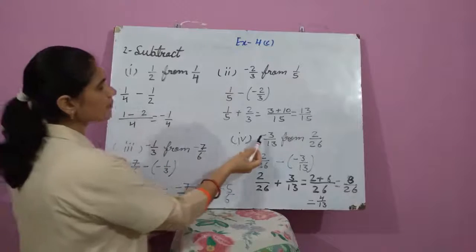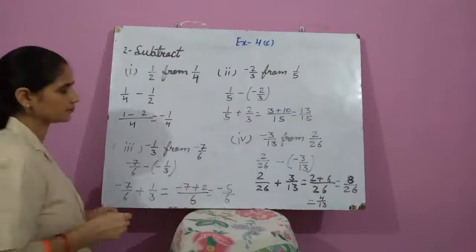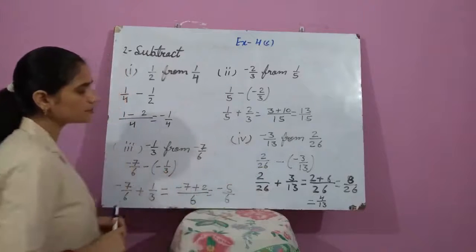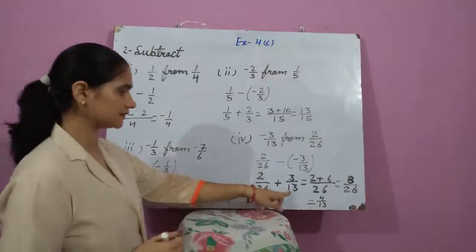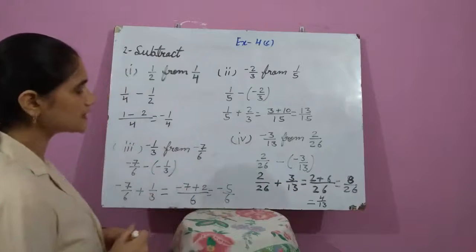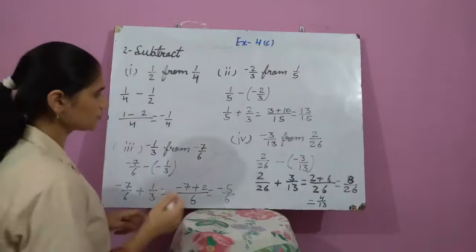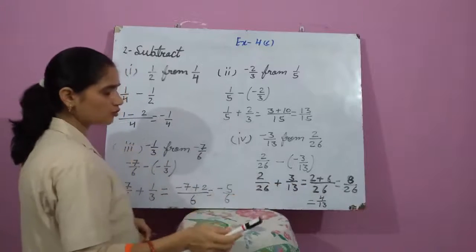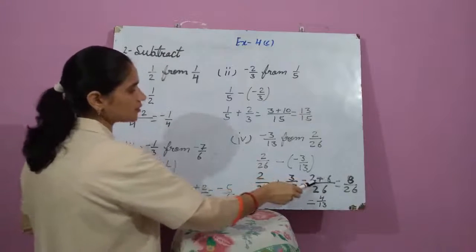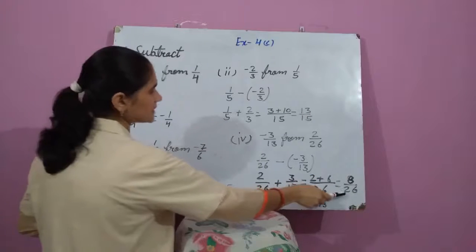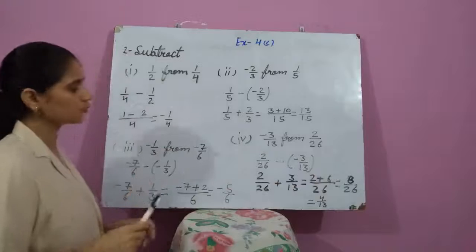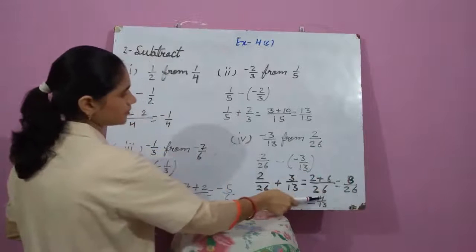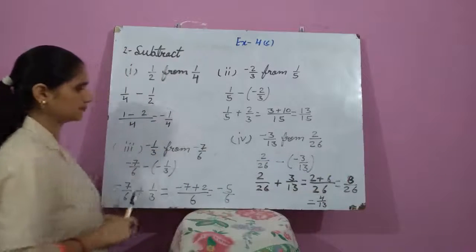Come to the fourth part: minus 3 upon 13 from 2 upon 26. We compute 2 upon 26 minus (minus 3 upon 13); minus minus becomes plus. The LCM of 26 and 13 is 26. Then 26 divided by 26 is 1, and 1 multiplied by 2 is 2; plus 26 divided by 13 is 2, and 2 multiplied by 3 is 6. So 2 plus 6 is 8 upon 26. Both are divisible by 2, giving the required answer 4 upon 13.